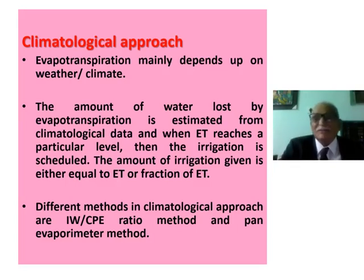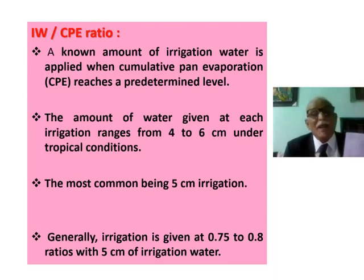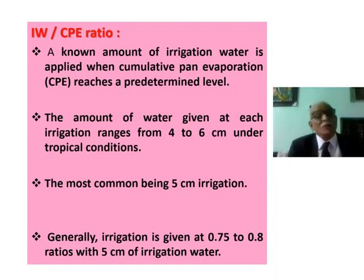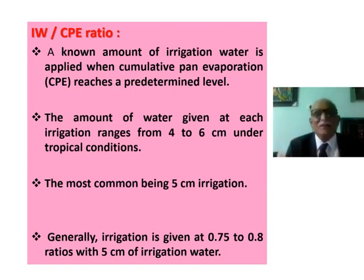One method for scheduling irrigation is the Irrigation Water by Cumulative Pan Evaporation ratio — IW/CPE. This method is very dependable and interesting. A fixed amount of irrigation water, typically five centimeters, is applied when the cumulative pan evaporation reaches a predetermined level.